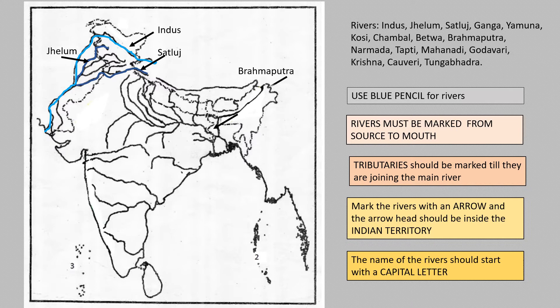Now we are coming to Brahmaputra — it is also known as Sangpo. Here is Brahmaputra. Then this blue one is Ganga, that's the main river. Now for tributaries: this is Kosi, which is a left bank tributary.